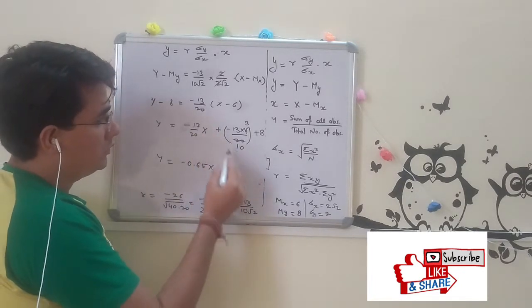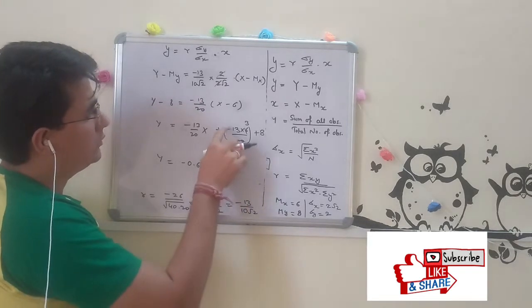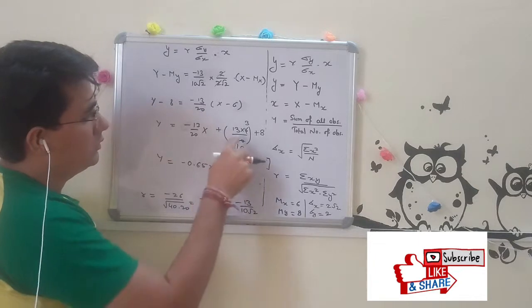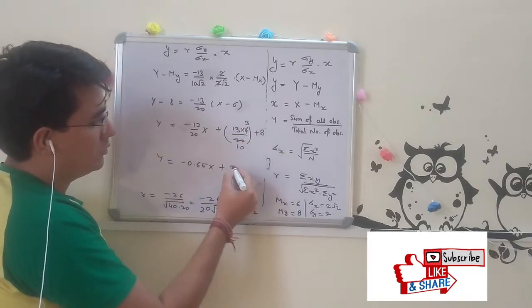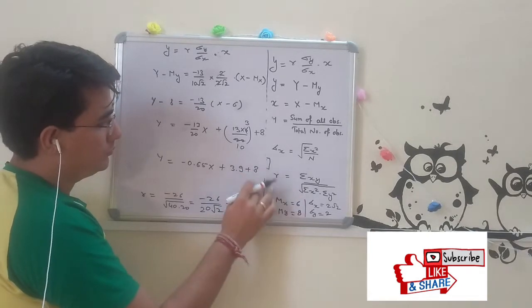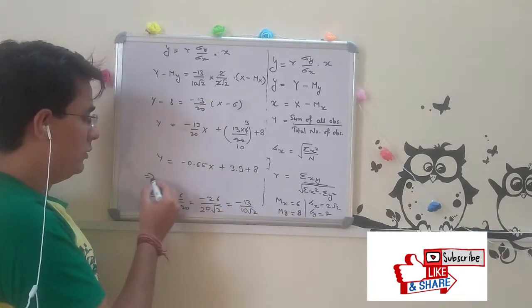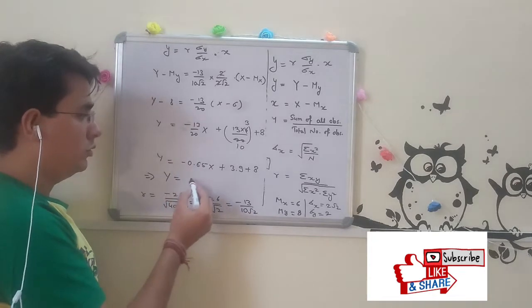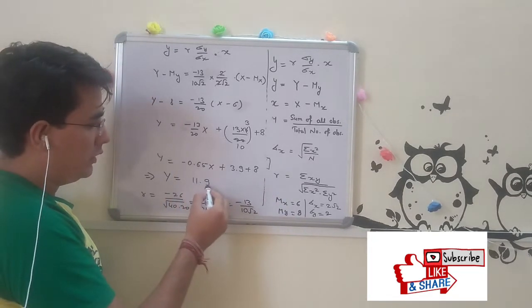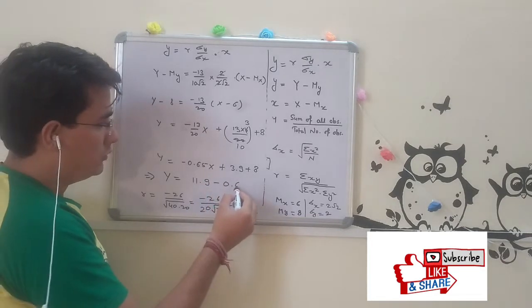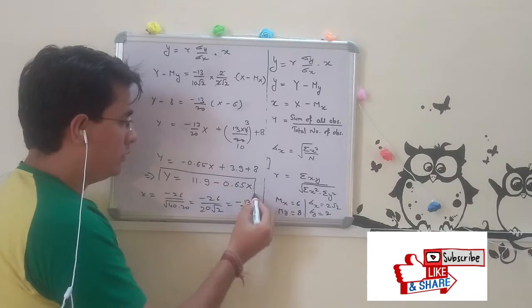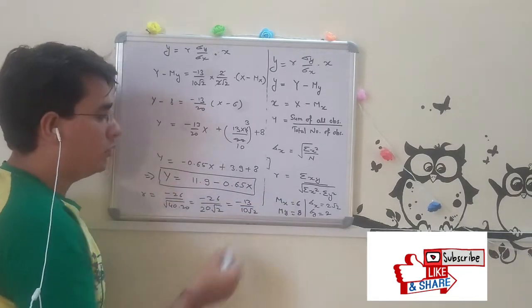Minus times minus is plus, and 39 over 10 is 3.9 plus 8. So the equation is Y = 11.9 minus 0.65 X. This is our regression equation of y on x.